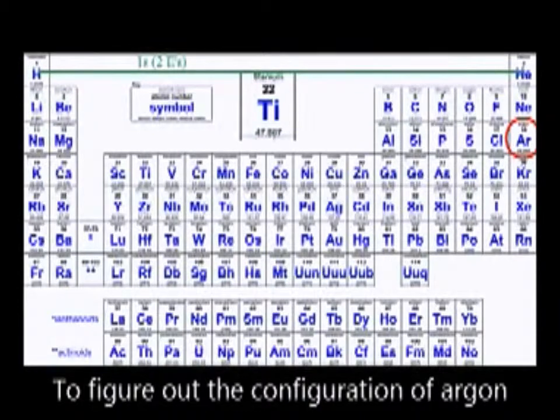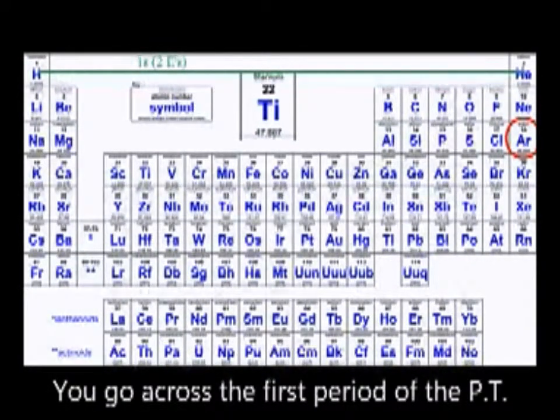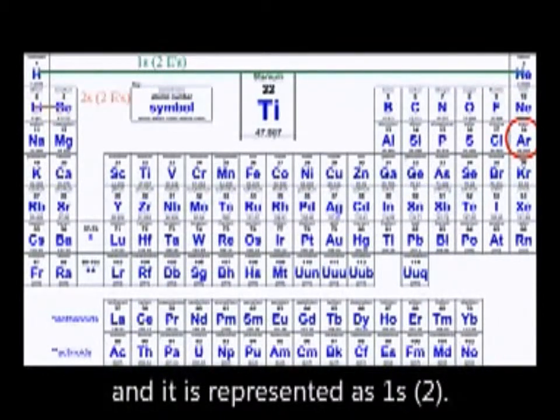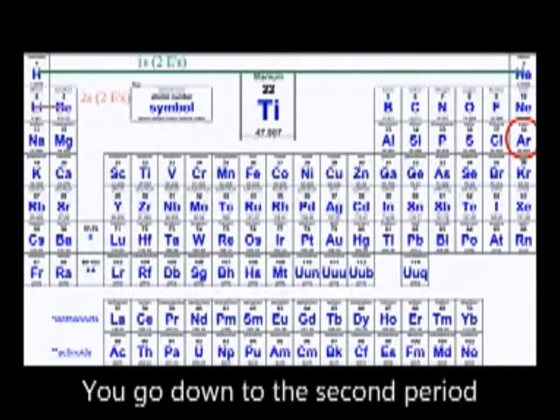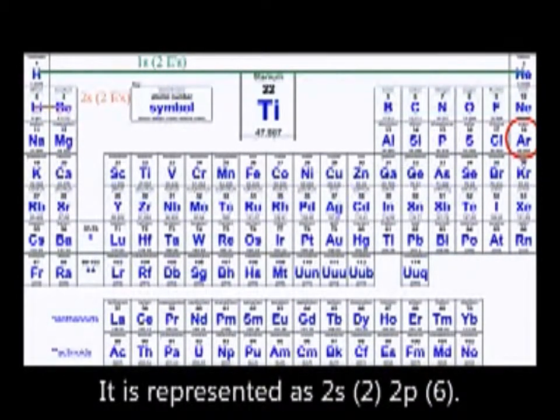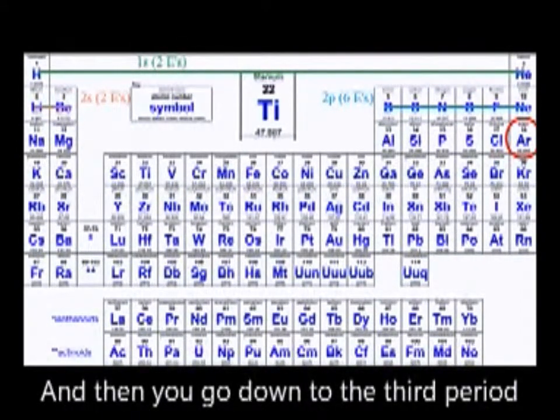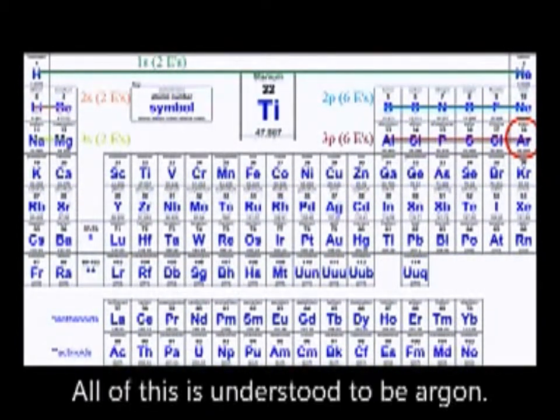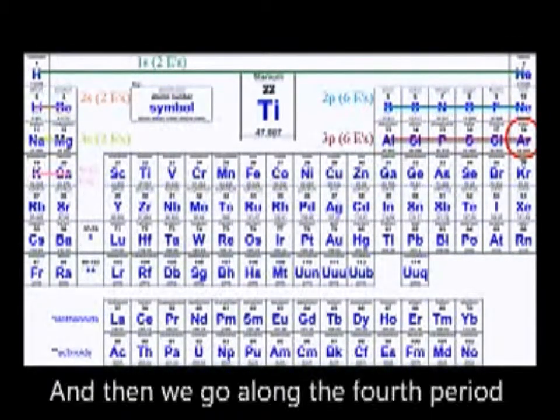To figure out the configuration of argon, we'd go across the first period of the periodic table, and it's represented as 1s2. You go down to the second period, it is represented as 2s2, 2p6. And then you go down to the third period, which is represented as 3s2, 3p6. All of this is understood to be argon.